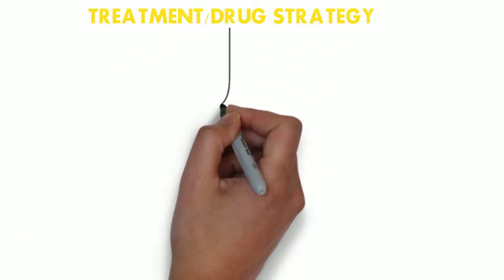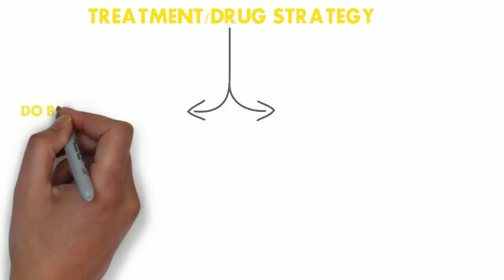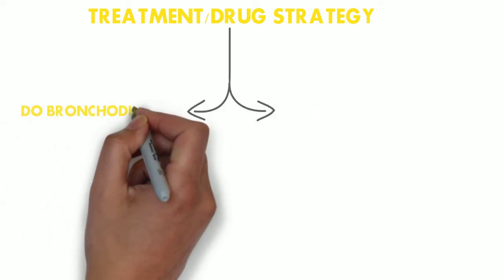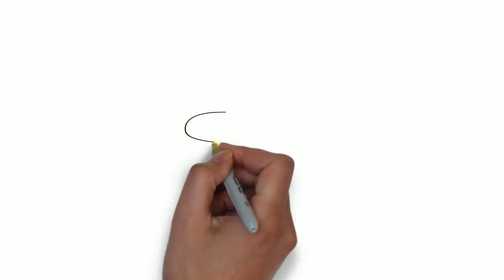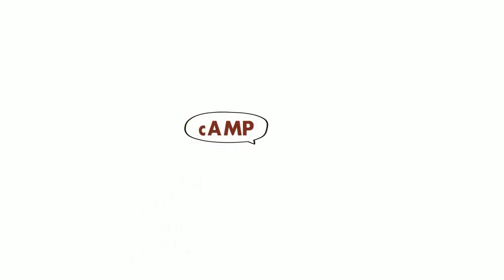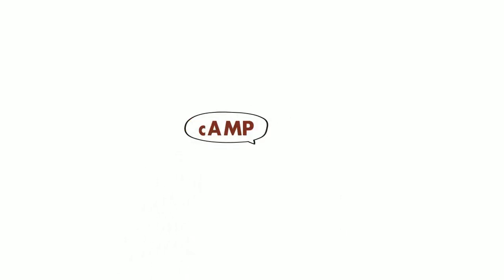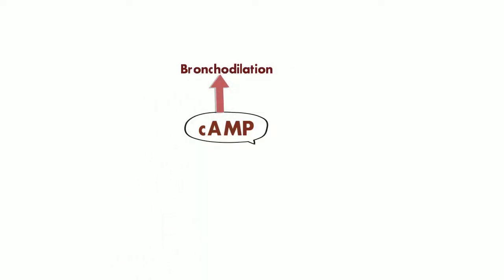Now coming to the treatment part. We have to do two things: one is bronchodilation and the other is reversing the bronchoconstriction. Let's talk about the bronchodilators first. Taking it to the biochemical level, we have a molecule called cyclic AMP which causes bronchodilation. These bronchodilators act by increasing the level of cyclic AMP.